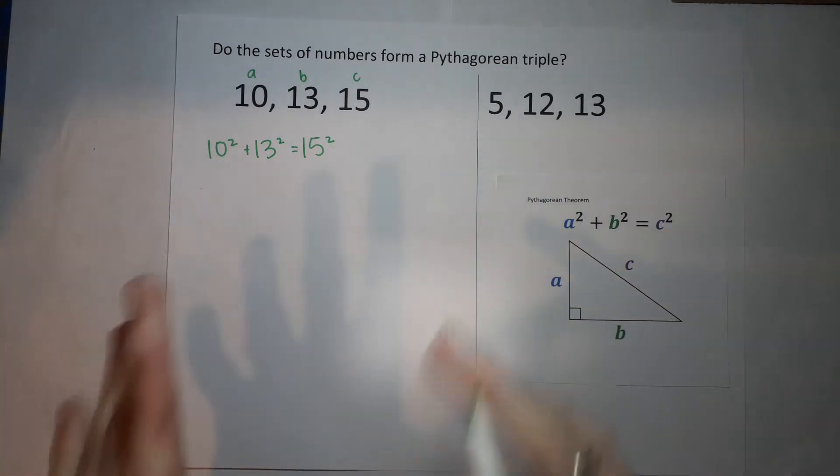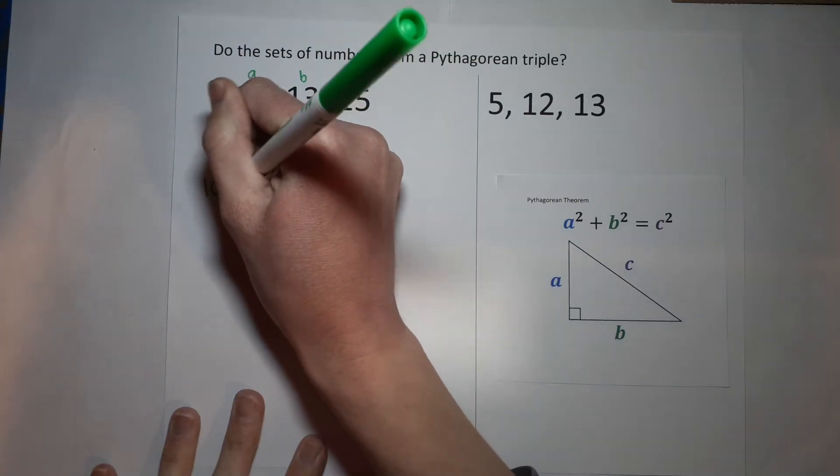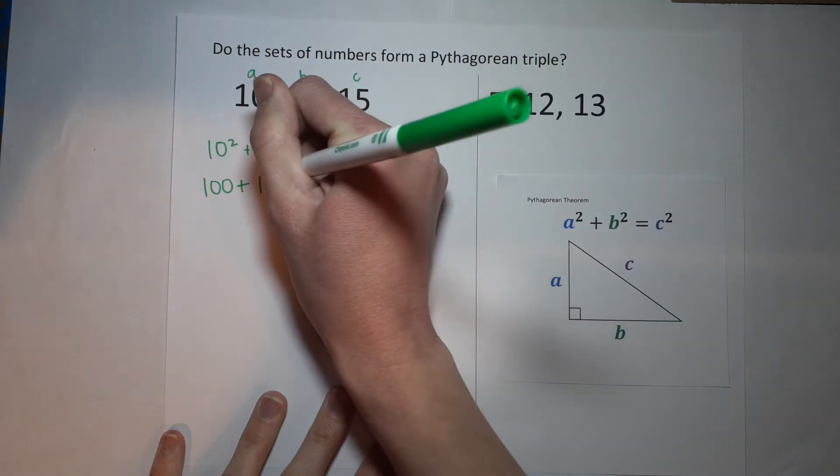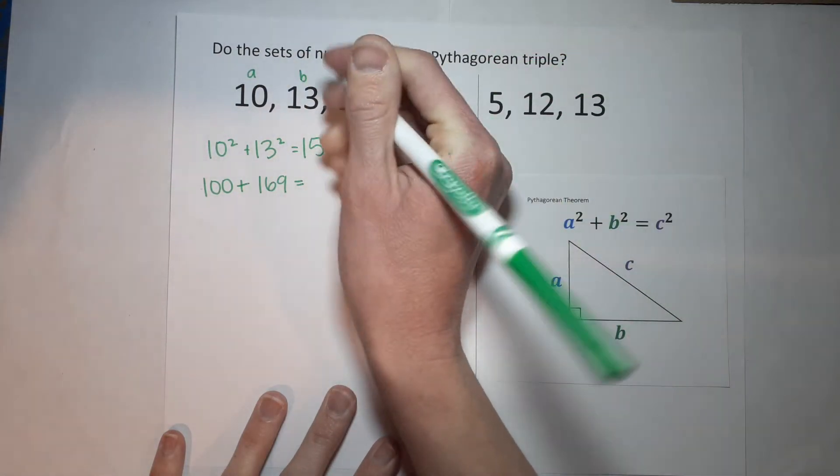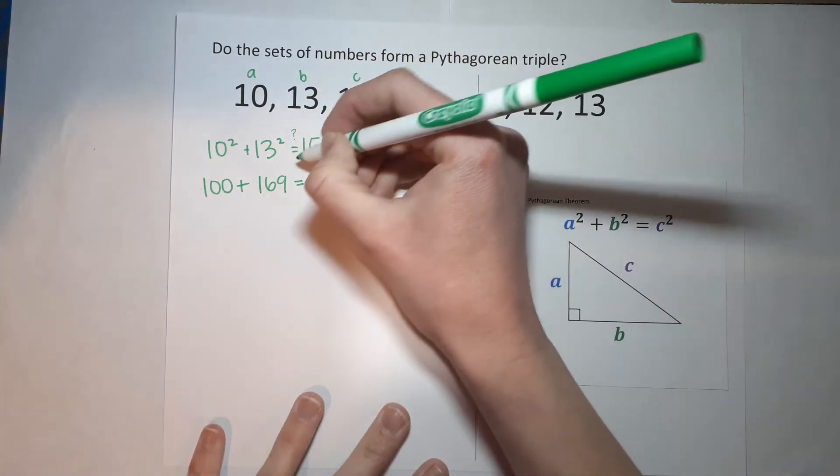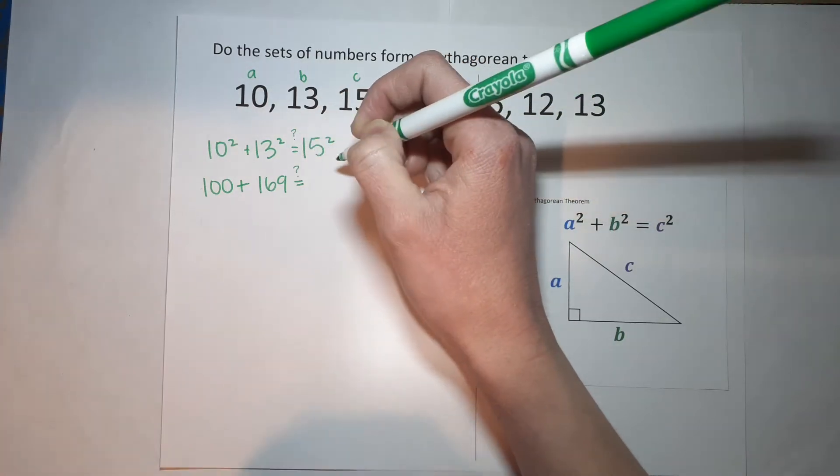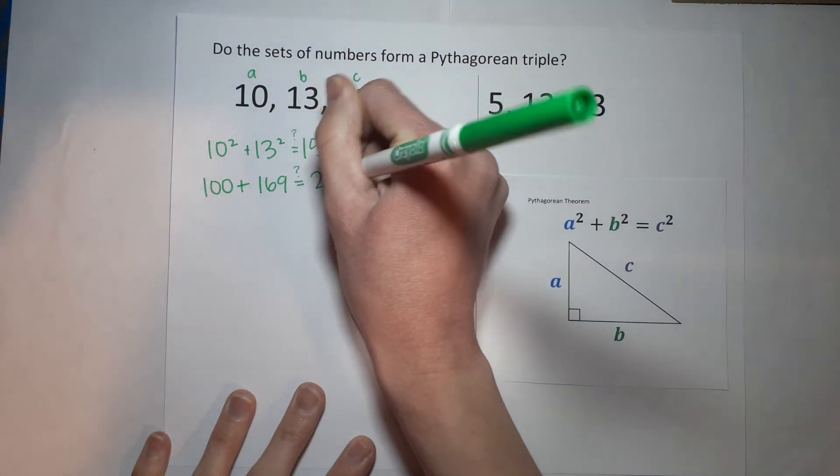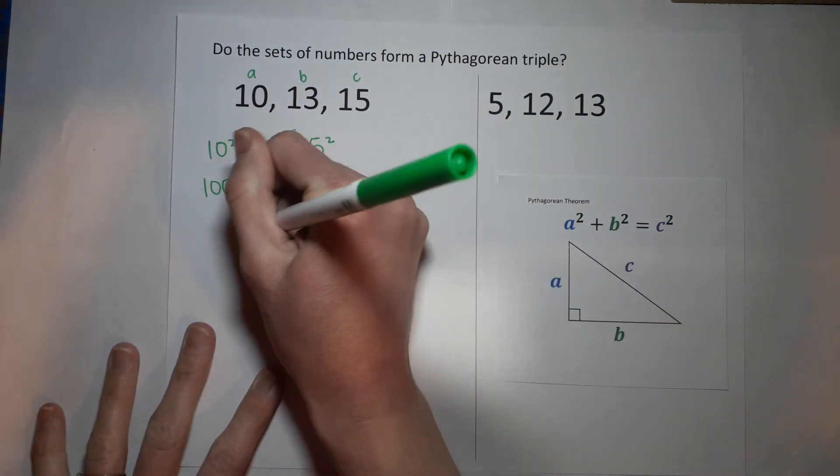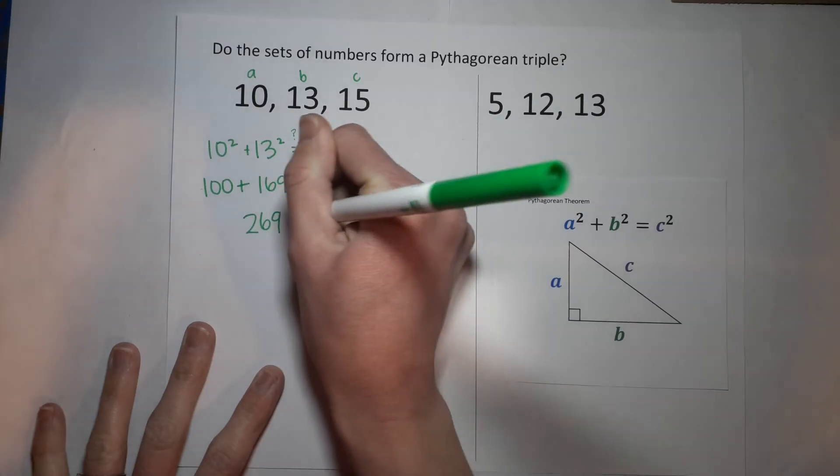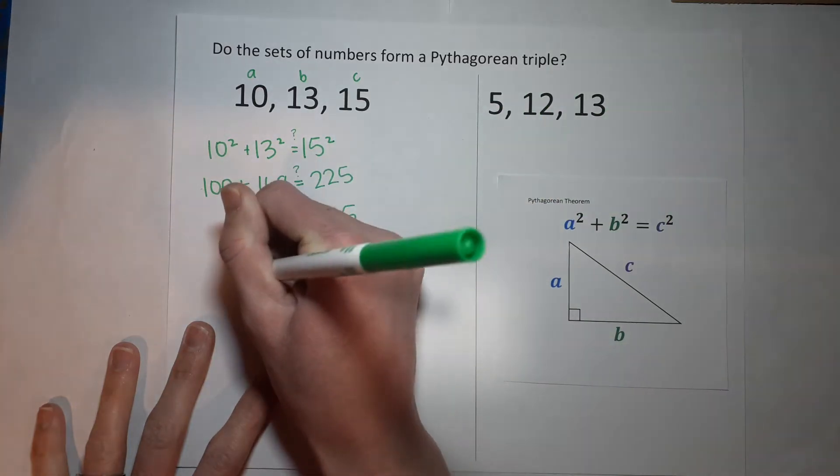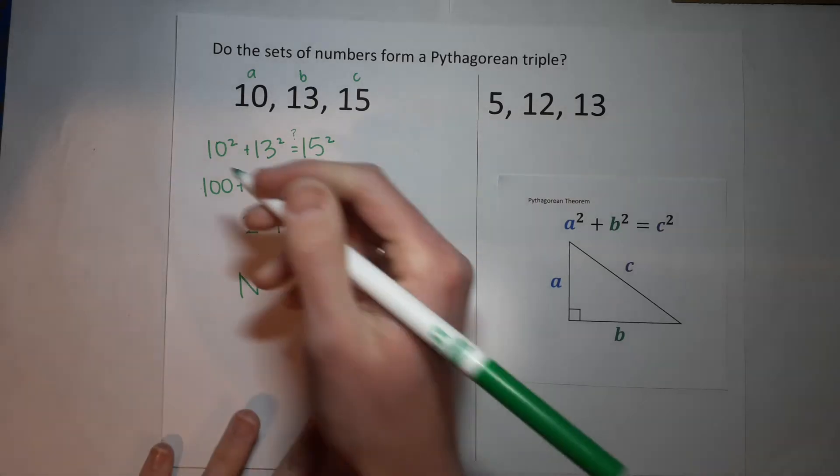Plus 13² gives me 169. I should put a little question mark here because we're seeing if it's equal. We don't know for sure if it's equal or not, so we'll put that there. 15² is 225. Now 100 + 169 is 269. So does 269 equal 225? No.